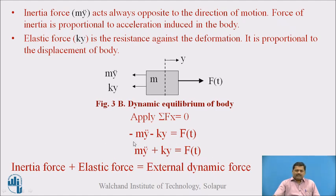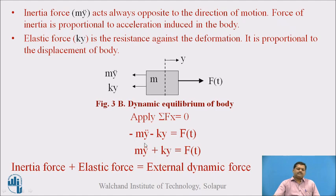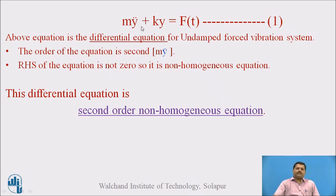The significance of the equation mÿ + ky = F(t) is that for any body where damping is not considered, the resistance offered against deformation is elastic resistance, and resistance against change in the body is the inertia force. The summation of elastic resistance and inertia force counterbalances the effect of the external dynamic force F(t). This is the final mathematical equation of undamped forced vibration, labeled equation number 1.